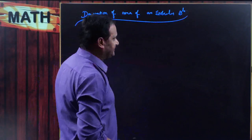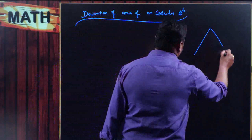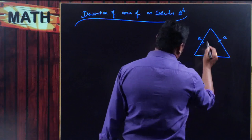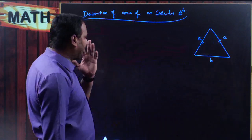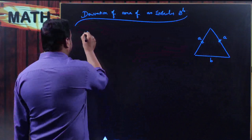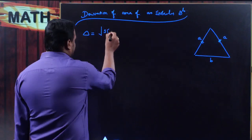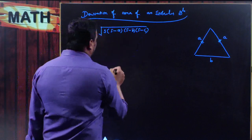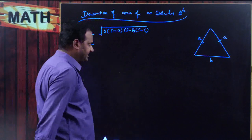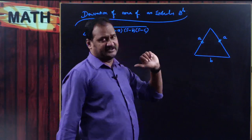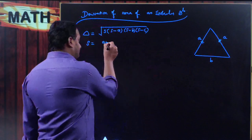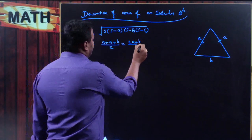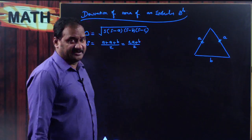In order to derive the area of isosceles triangle, I am taking a triangle with two sides equal. Let these two equal sides be small a, and the unequal side be small b. I am writing the formula for area of triangle by Heron's formula: root over s into s minus a into s minus b into s minus c. Where s is the semi-perimeter, that is a plus b plus c divided by 2. Here the sides are a, a, and b, so s equals 2a plus b, whole divided by 2.